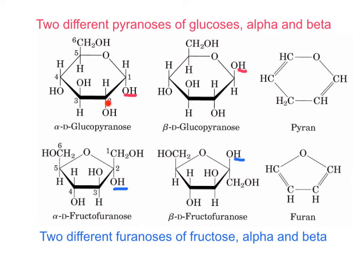Glucose forms pyranoses, which are 6-membered rings that resemble the structure of pyran, with an oxygen in the ring. They are glucopyranoses — alpha when the OH is below the plane, and beta when it is above the overall plane. For fructose, the most stable structures are furanoses — alpha when the OH is below, beta when the OH is above the overall plane — and they resemble the 5-membered ring ether of furan.